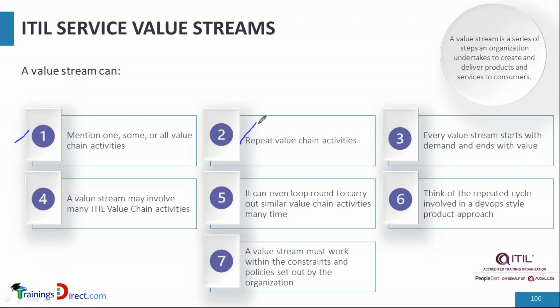Value chain activities may be repeated — it's not that 'engage' happens only once in one value stream; it can happen several times. An important point is that every value stream begins with a demand and ends with a value. For example, when a customer makes a request for a new service, that's the demand, and when the product or service is delivered and the customer starts using it and sees value, that's the end. Value streams may involve many ITIL value chain activities, and there can be looping of a single activity. However, value streams must work within constraints and policies — resource constraints, time constraints, or service level agreements.